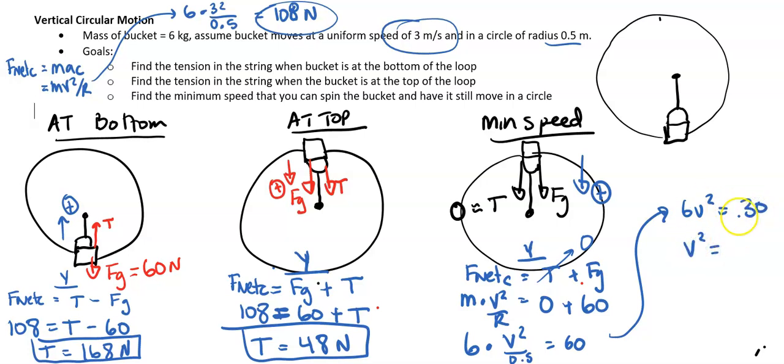So V squared equals 30 over 6, which is 5. And V will be square root of 5, which is approximately 2.24 meters per second. I apologize. My memory was off. 2.23 meters per second. That is the min speed.